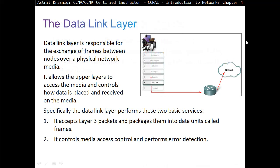The Data Link Layer is responsible for the exchange of frames between nodes over physical network media. It allows the upper layers to access the media and control how data is placed and received on the media. Specifically, the Data Link Layer performs these two basic services: it accepts Layer 3 packets and packages them into data units called frames, and it controls Media Access Control and performs error detection.